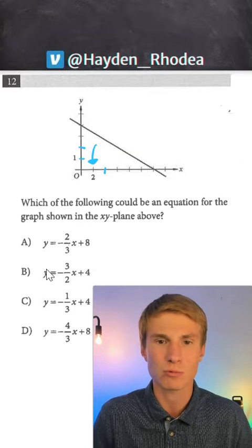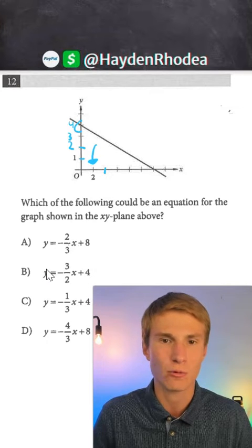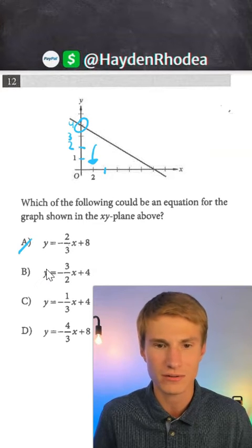We see on our y-axis, we're going up by one. So we go from one to two to three, and then we see our y-intercept is going to be at four. So just from that, we can get rid of A and D.